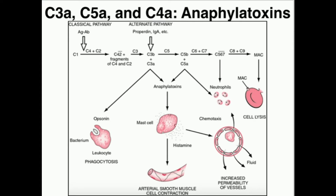In general, these proteins — specifically C3A and C5A — are going to do a few things. Number one, particularly C5A because it is the strongest, and also C3A, they're going to act as chemoattractants. They're going to promote chemotaxis of white blood cells — for example, neutrophils.